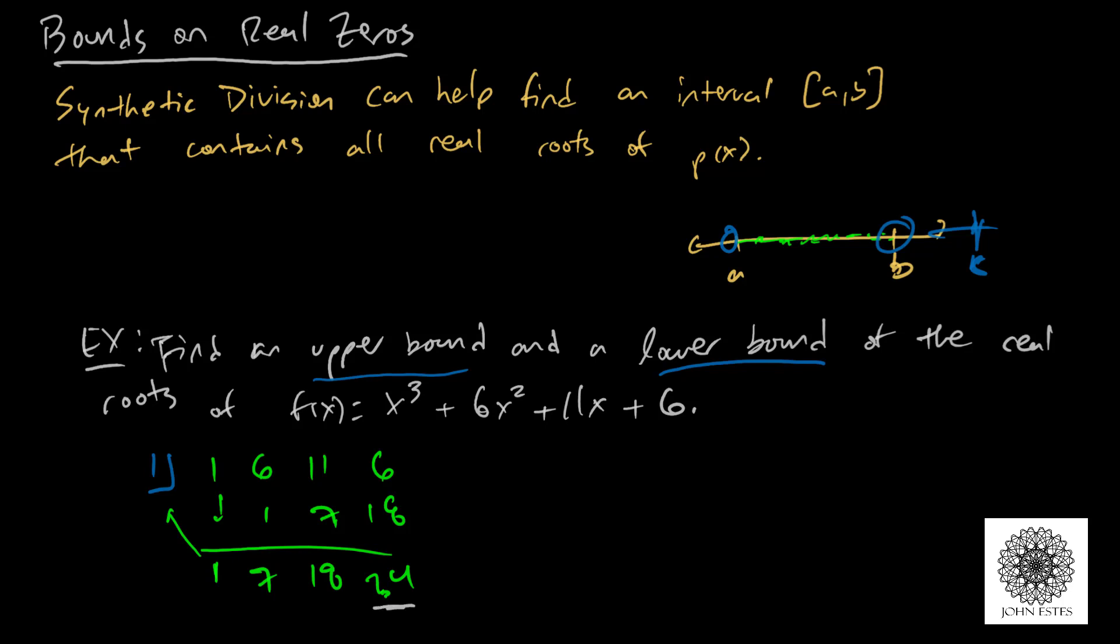But what it does tell me is notice that these are all positive. If it's all positive, then what that means is I have found one of these upper bounds. This implies that every real root is less than 1.